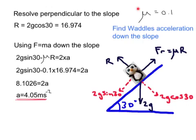So what we've got here is we know the coefficient of friction is 0.1, and we are finding Waddle's acceleration down the slope. Today we looked at using F equals ma and resolving when we've got a situation involving inclined planes. So μ is 0.1, Waddle's acceleration down the slope.